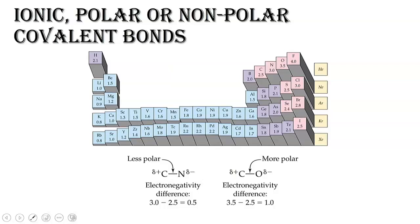So quickly, if we take a look at this periodic table, notice that going from left to right on this periodic table, these numbers are representing electronegativity. This number increases as I go from left to right. This number also increases as I go from bottom to top.